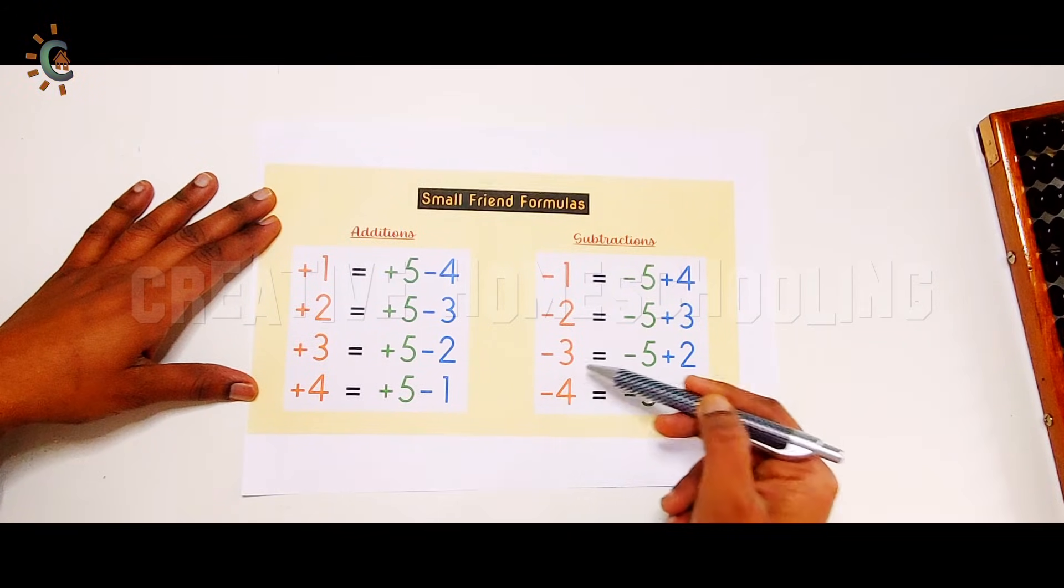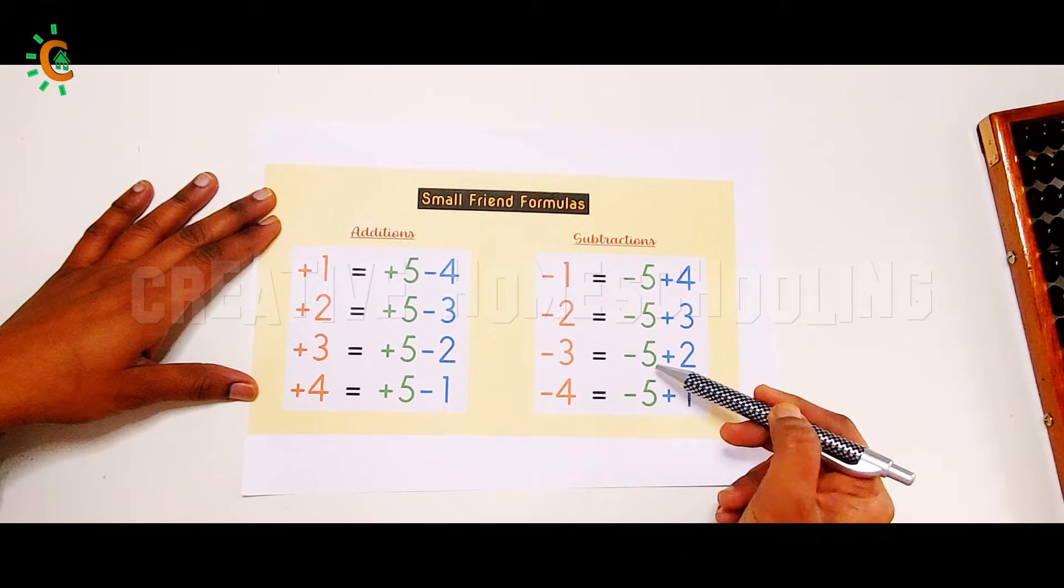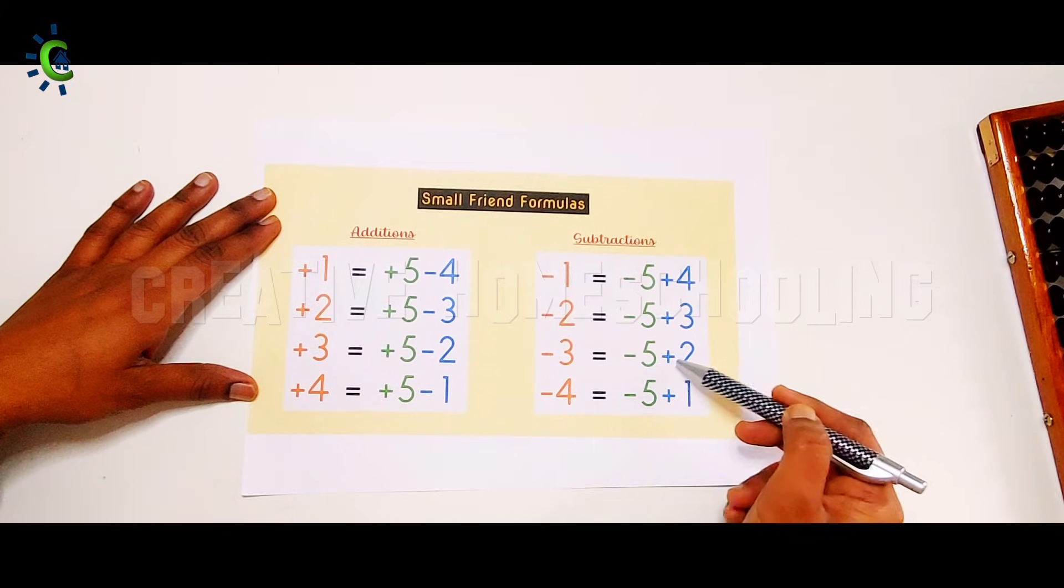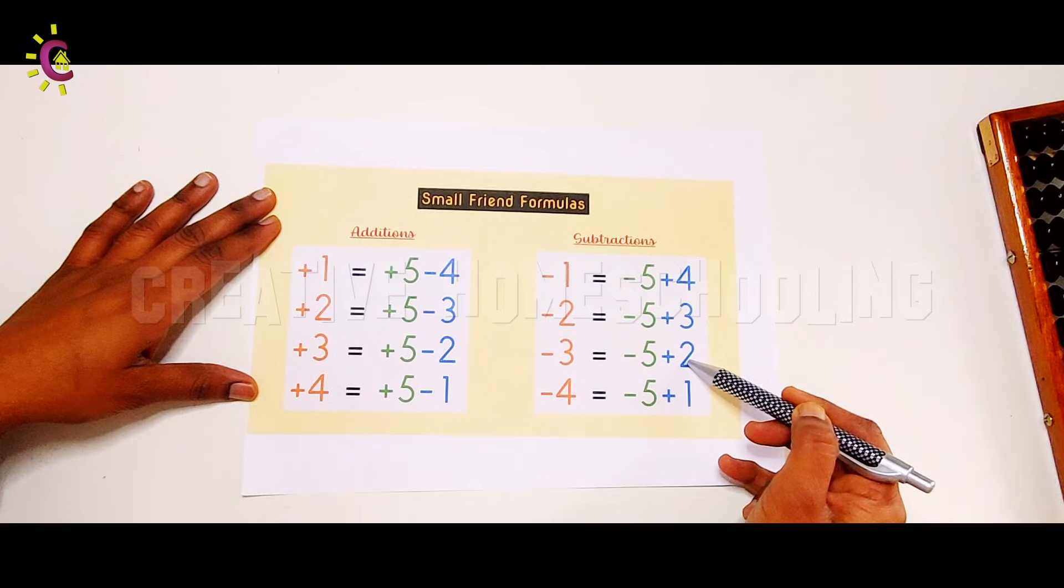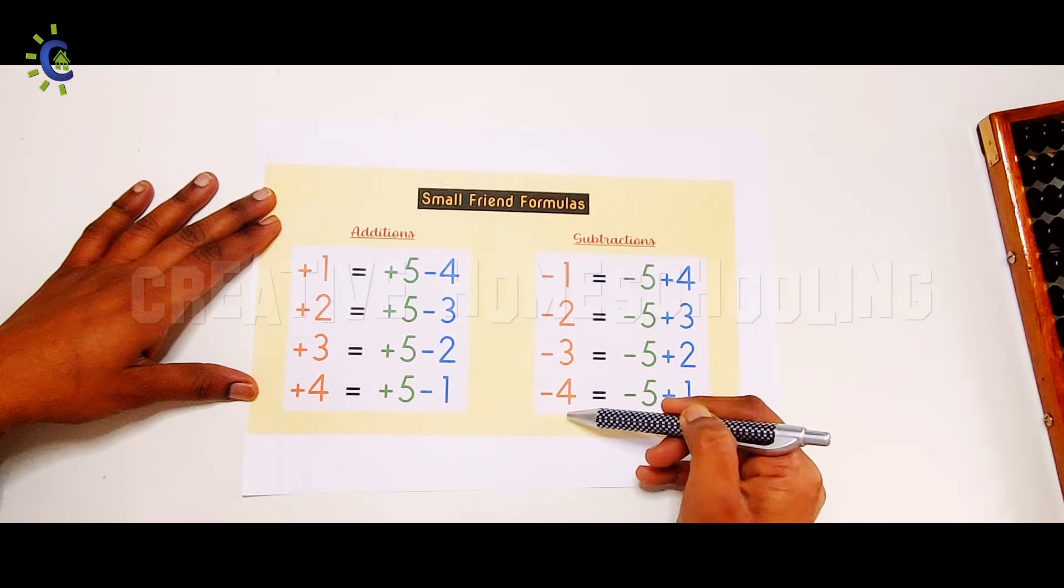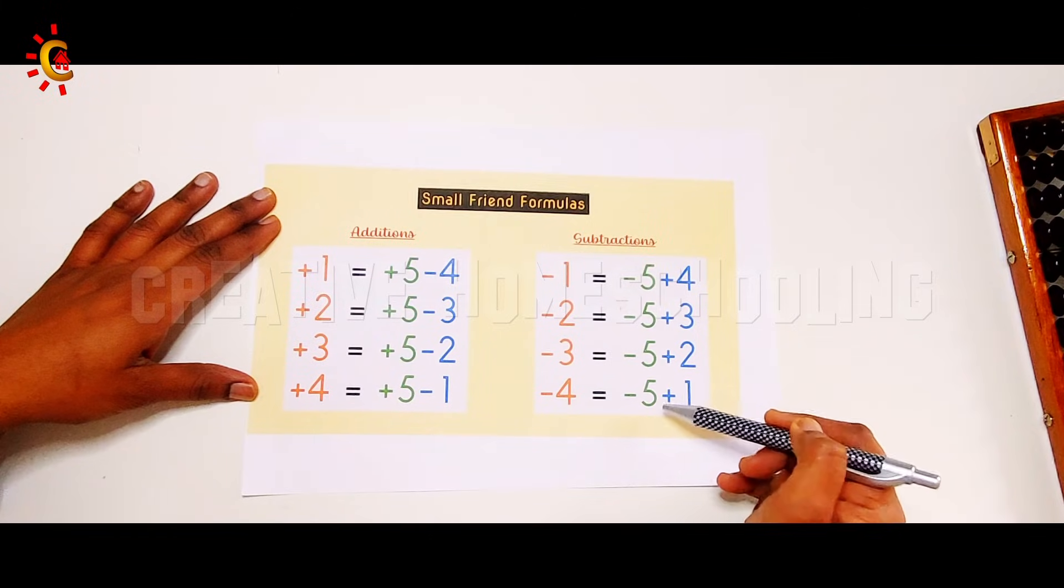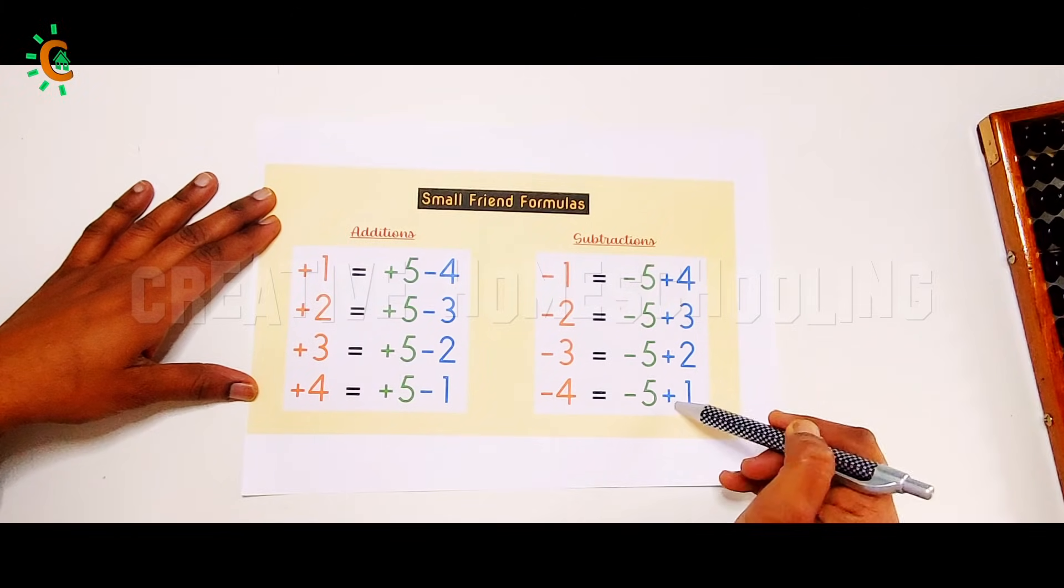If we want to subtract four beads, we must use the formula minus 4 equals minus 5 plus 1.